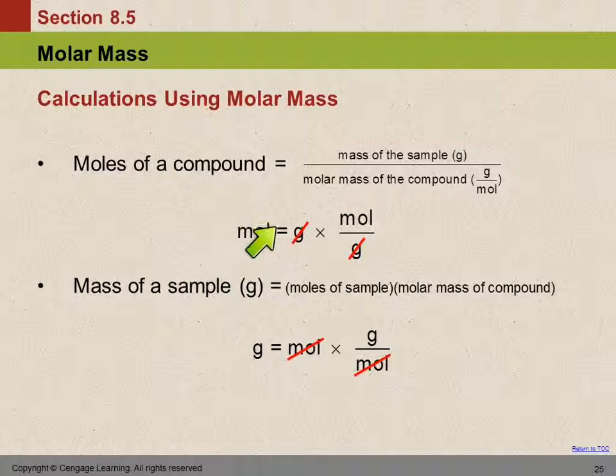So if we want to find moles of a compound, we take the amount in grams, and then we need to use a conversion factor that's going to relate moles and grams. We're going to have the grams on the bottom and the moles on the top. That's the molar mass. Molar mass is how many grams per mole? If we're trying to find the mass of a sample in grams, we're going to take the number of moles that they gave us, and we're going to multiply by grams over moles so that the moles cancel out.